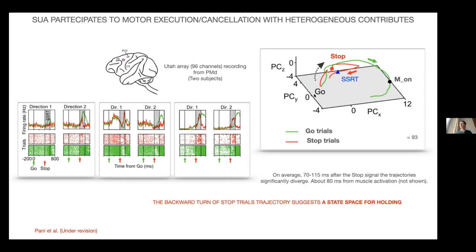By applying a PCA-based approach, this helps somehow to have emerging collective information. For example, it is evident here that the activity at the population level of the stop trials diverged from the trajectory in the go trials during the stop signal reaction time, moving backward toward the initial state, compatibly with the existence of a state space for holding.